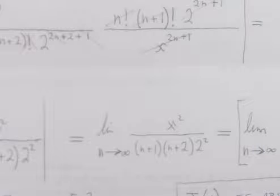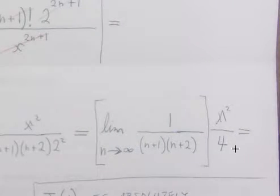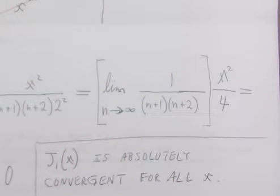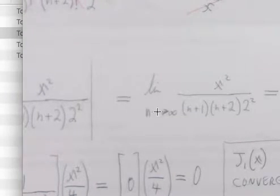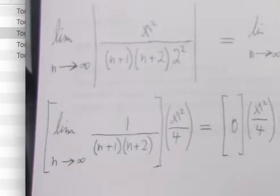And then, if we pull the x squared and the 2 squared outside of the limit, then we're just left with evaluating limits of 1 divided by n plus 1 times n plus 2. And, giving away the answer a little bit early by scrolling over the wrong place. Sorry. I'm almost there. Okay.